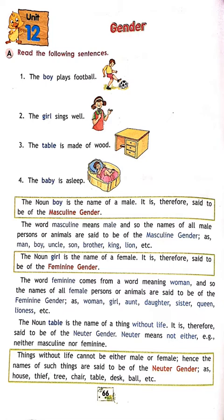Read the following sentences. First: the boy plays football. Second: the girl seems weird. Third: the table is made of wood. Fourth: the baby is asleep. Now, to find out the genders here — read the following sentences, then see what is given in the box. The noun 'boy' is the name of a male.